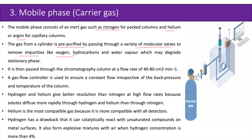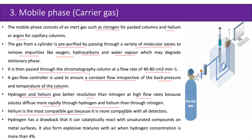The purified gas is then passed through the chromatography column at a flow rate of 40 to 80 cubic centimeters per minute. A gas flow controller ensures constant flow irrespective of back pressure and column temperature. Hydrogen and helium give better resolution than nitrogen at high flow rates because solutes diffuse more rapidly through them. Helium is the most compatible gas as it works with all detectors. Hydrogen has a drawback in that it can catalytically react with unsaturated compounds on metal surfaces and forms explosive mixtures with air when hydrogen concentration exceeds four percent.